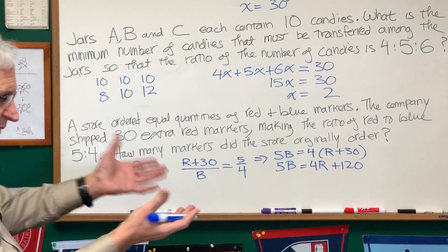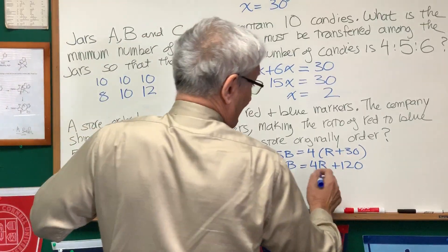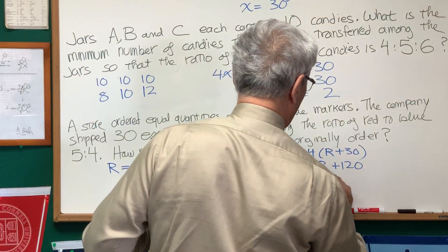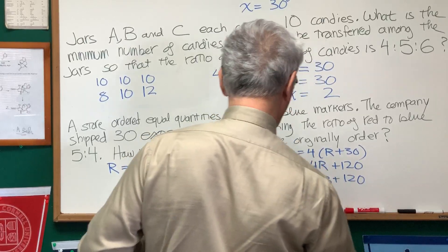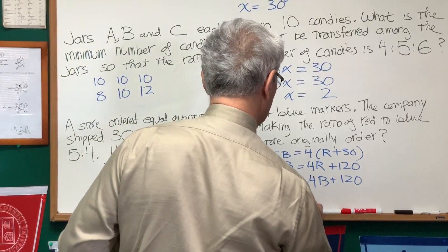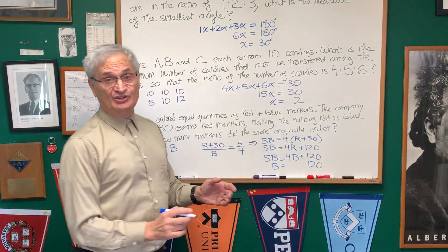Well, we know, we can solve this easily. We know that R is equal to B, so let's replace R with B. So, this is going to be 5B equals 4B plus 120, which leads us to the solution, subtracting 4B from both sides, B is equal to 120.